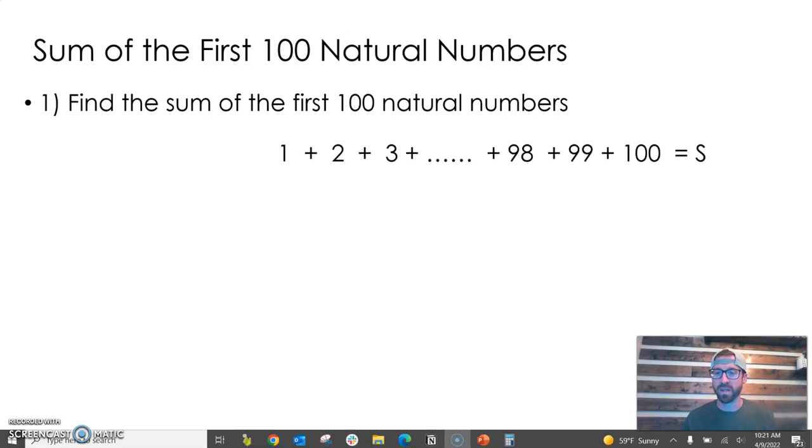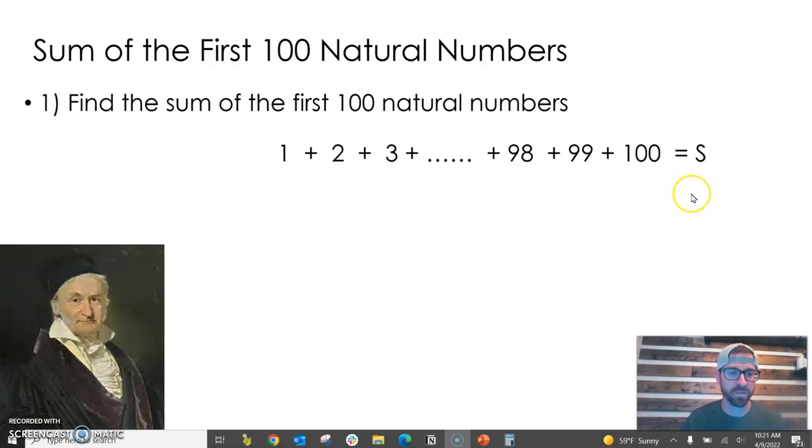There's kind of an urban legend that goes with this. We don't know if it's true, but evidently a famous mathematician, Carl Friedrich Gauss, before he was famous, was in like third grade. He was kind of smart enough that his teacher said, I want you to go add up the first 100 numbers. This is a picture of him right here, the old version of him.